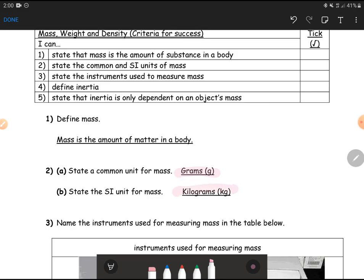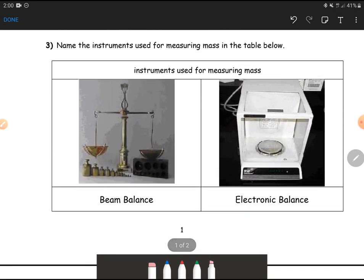We measure mass by using this kind of equipment, which is basically your beam balance as well as your electronic balance. These are the names for it. The ones we see in the lab is usually the electronic balance.